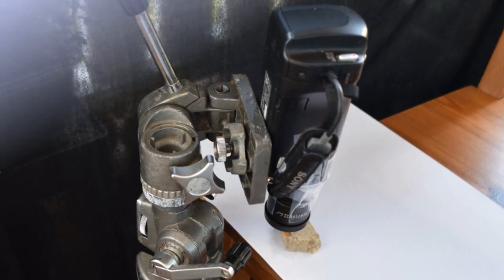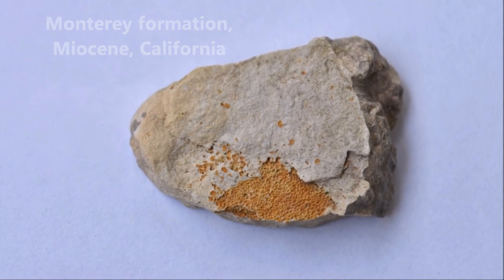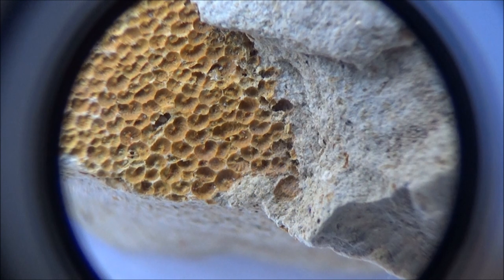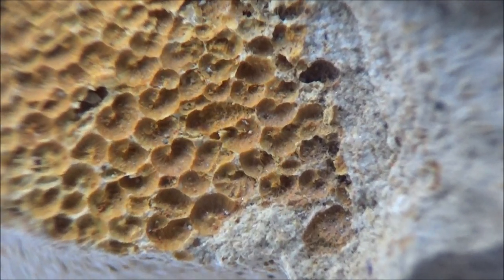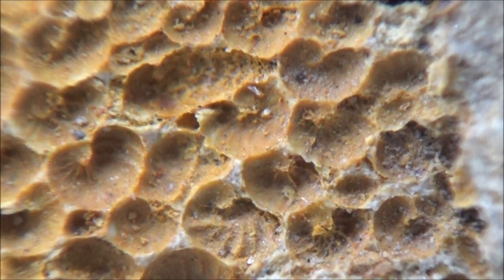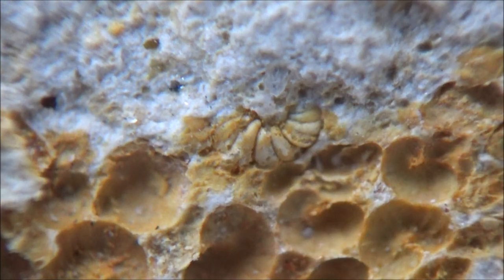For instance, this piece of dolomite with a bunch of round imprints that look like fish eggs to me, but after zooming in it became obvious that those are coiled shells of foraminifera. Surprise!